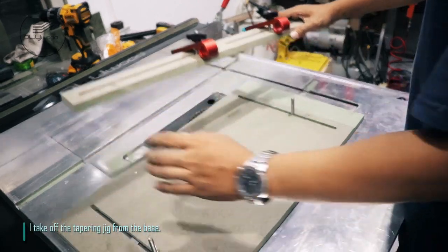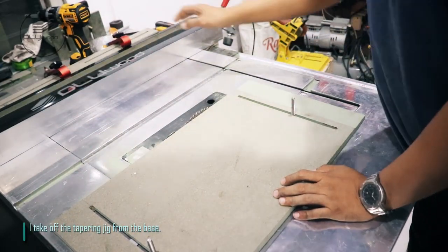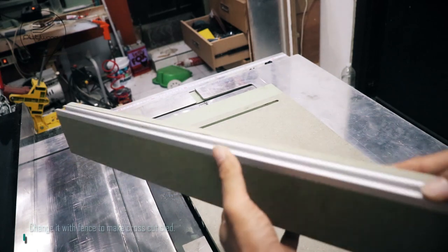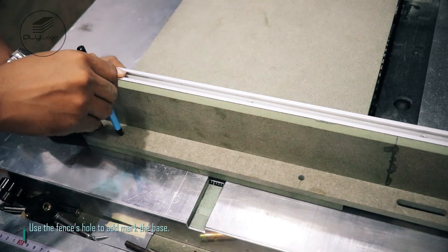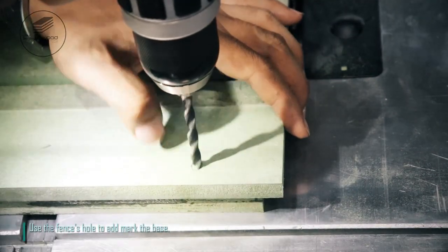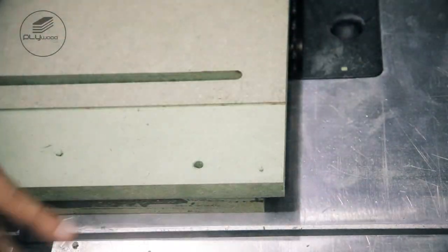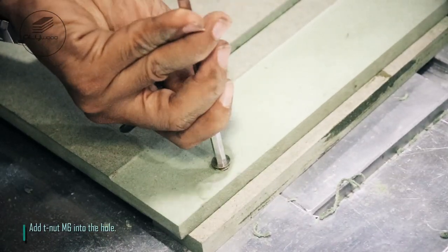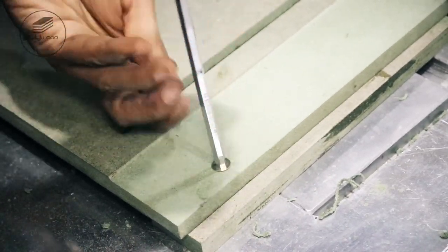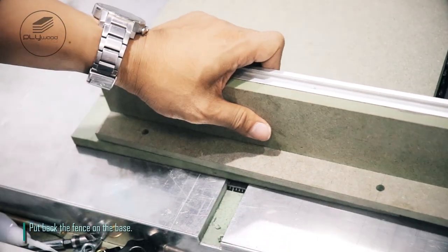I take off the tapering jig from the base. Change it with fence to make cross cut sled. Use the fence's hole to mark the base. Add T-nut M6 into the hole. Put back the fence on the base.